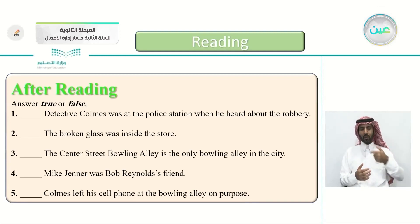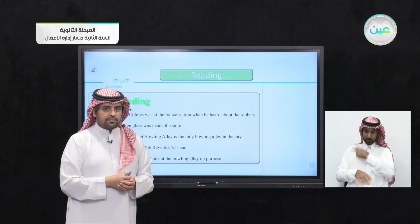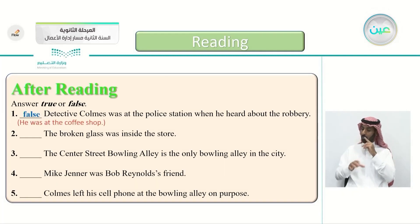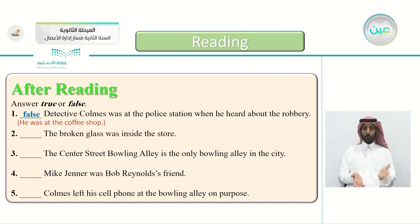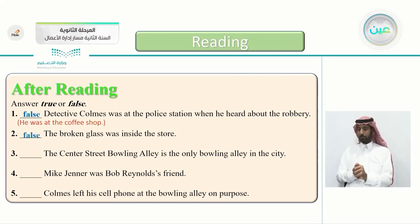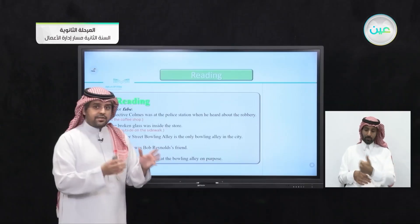Now the after-reading true or false questions. Number one: Detective Combs was at the police station when he heard about the robbery — that is false. The correct answer: he was at the coffee shop. Number two: the broken glass was inside the store — that is false. It was outside on the sidewalk, which was the key evidence Combs based his suspicion on.